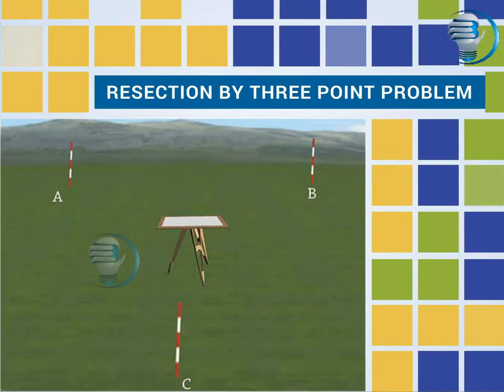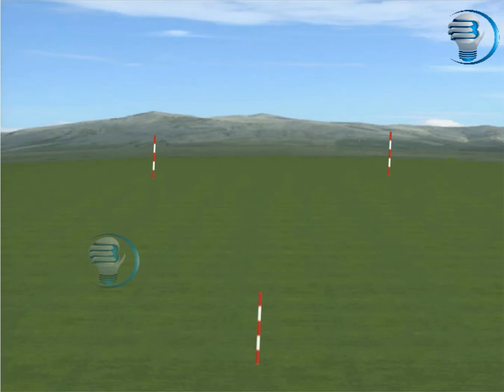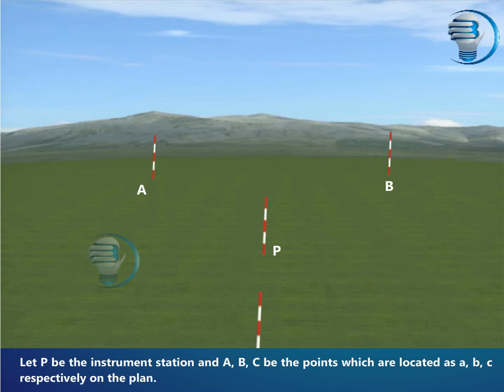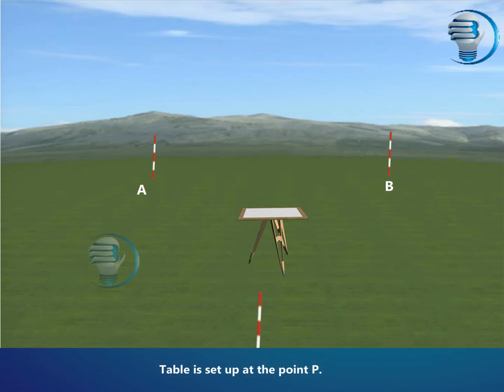Resection by 3-point problem. Let us see the method of resection by 3-point problem. Let P be the instrument station and ABC be the points which are located as ABC respectively on the plan. The table is set up at the point P.